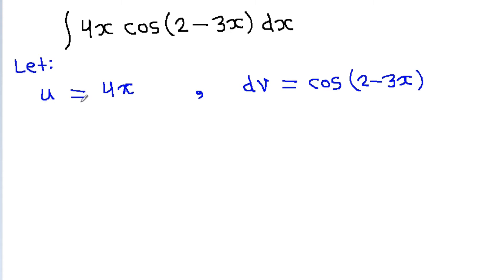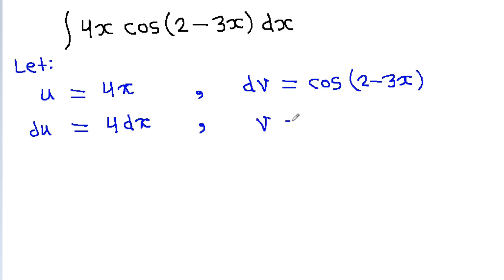From u equal to 4x, if we differentiate it, we get du equal to 4 dx. And from dv equal to cos(2-3x), if we integrate it, we get v equal to minus 1 by 3 times sin(2-3x).